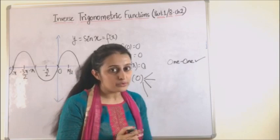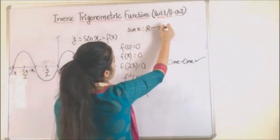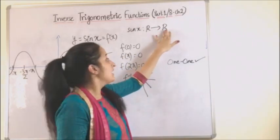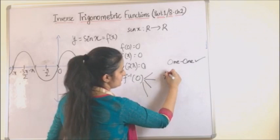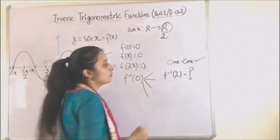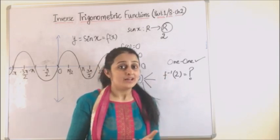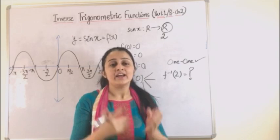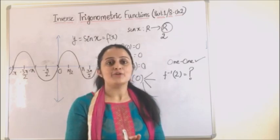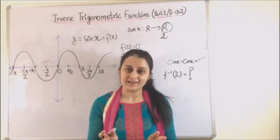Likewise if I do not take the function to be onto that means if I define sin x in its natural way that means if my codomain stays R then in that case, if I pick up this element 2 from the codomain what is the pre-image? What is the pre-image of sin inverse 2? Nothing. It does not exist. Once again if an element cannot have an image how could it even be a function? That's why we conclude for a function to have its inverse it has to be one-one and onto simultaneously.